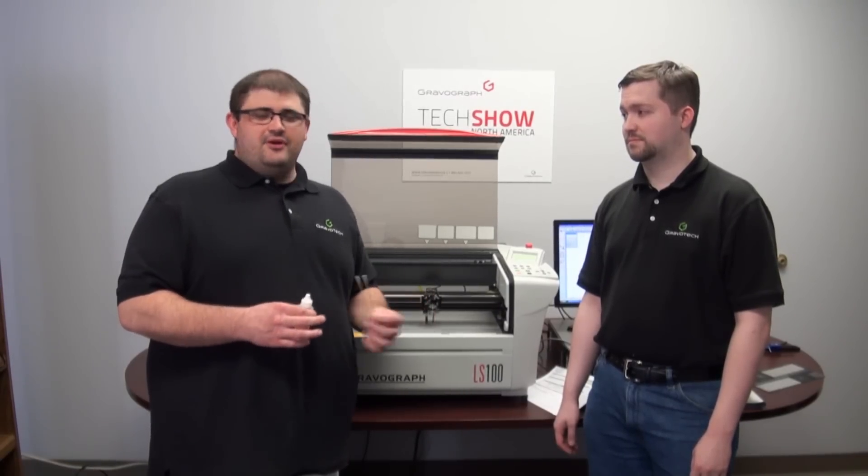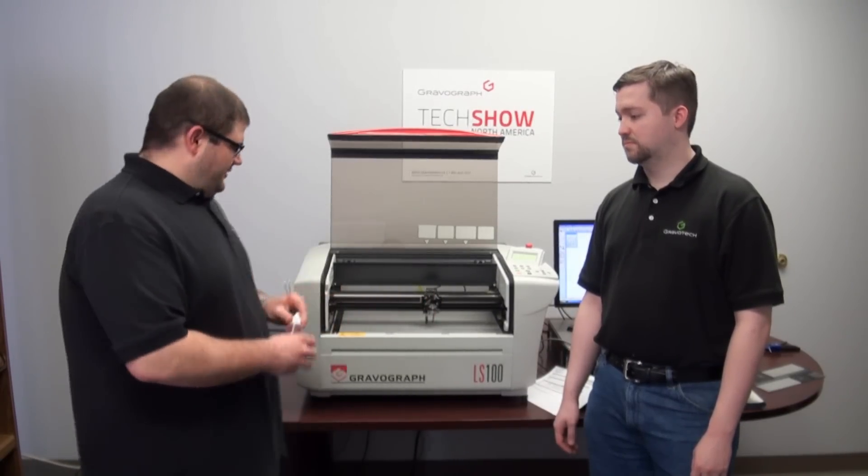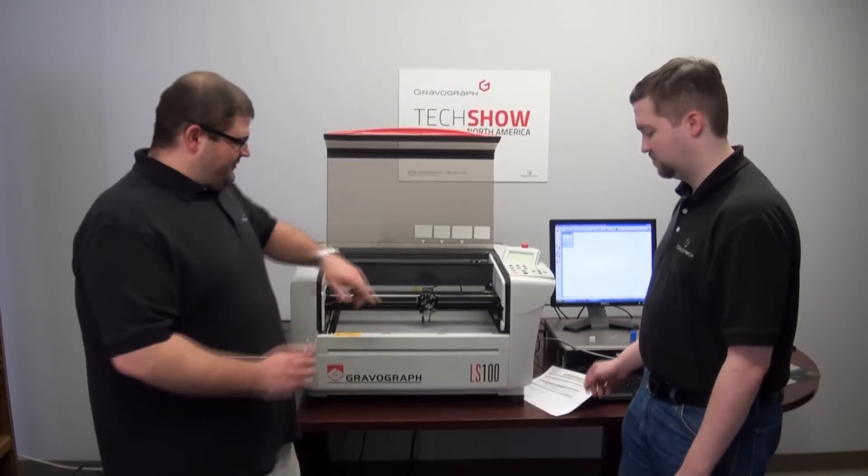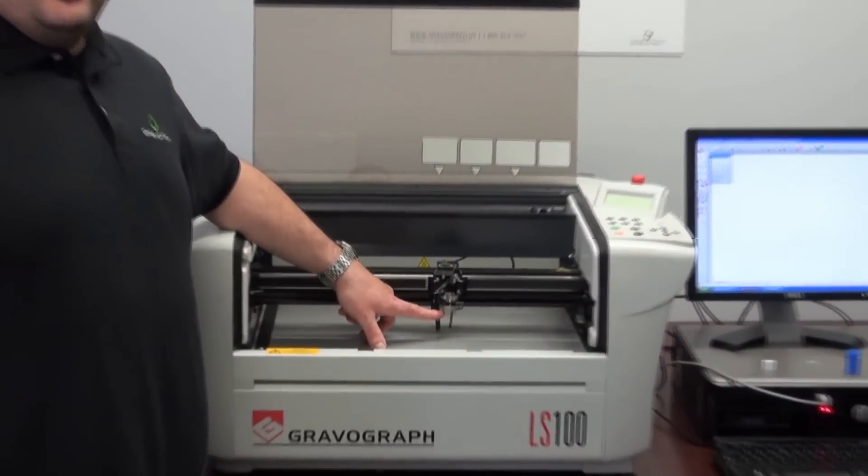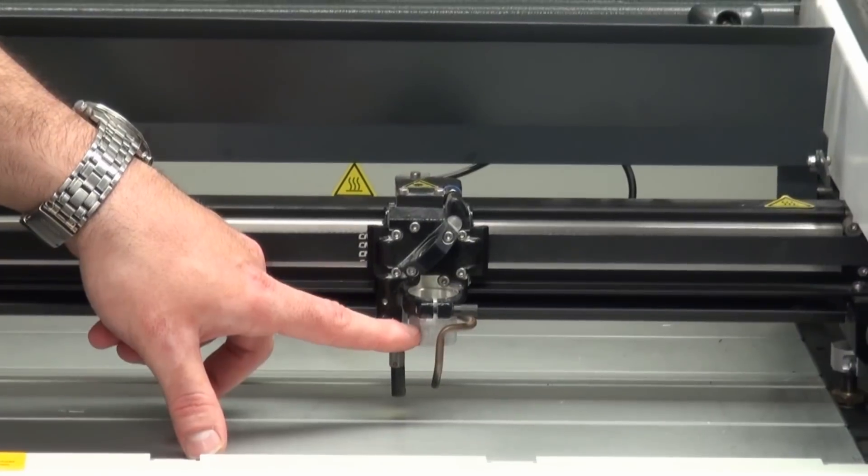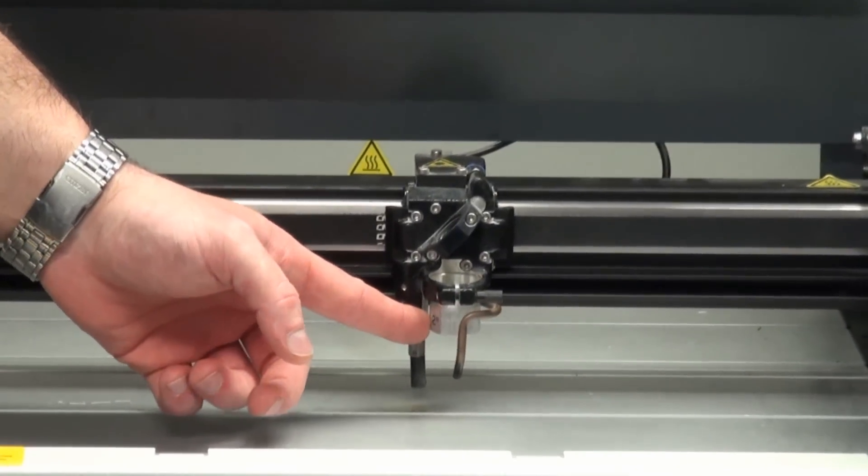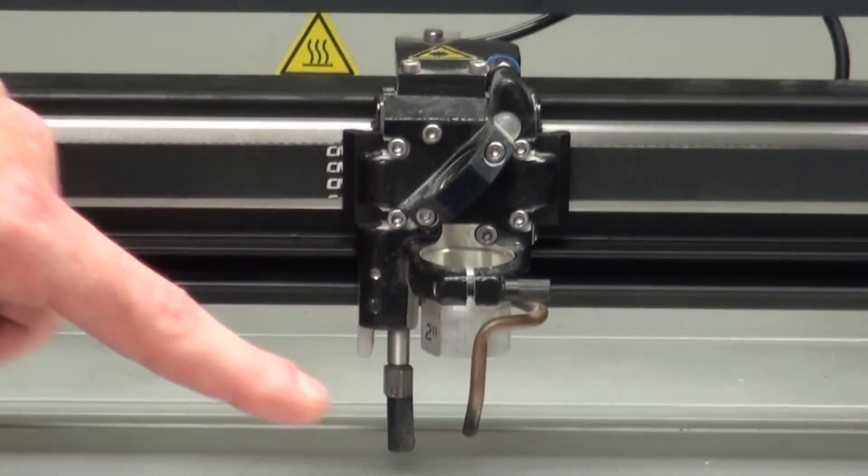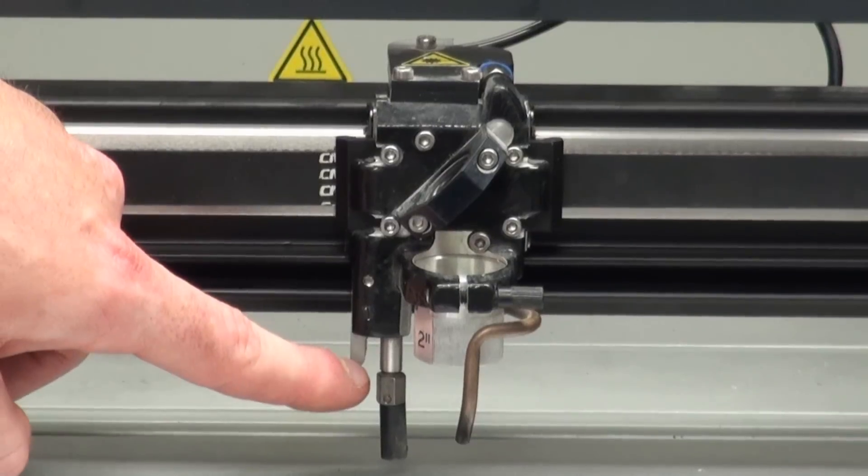And then again, if you're having issues, you'll want to clean it. So what we have is our lens. You can go ahead and zoom in. This silver part right here is your lens. It's right beside the auto-Z post that we were just talking about.